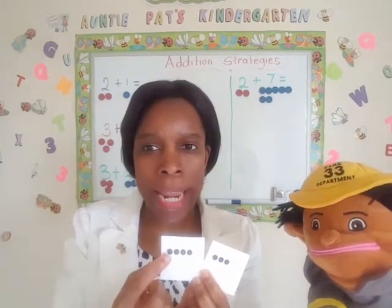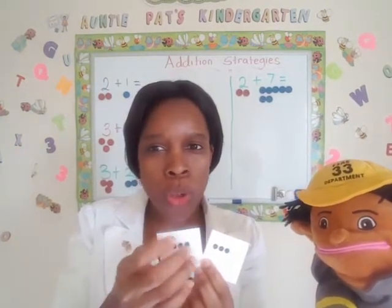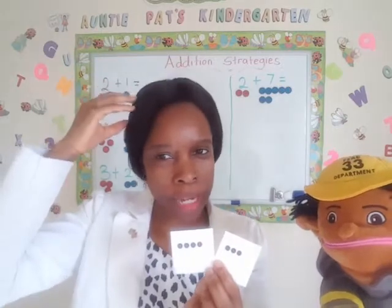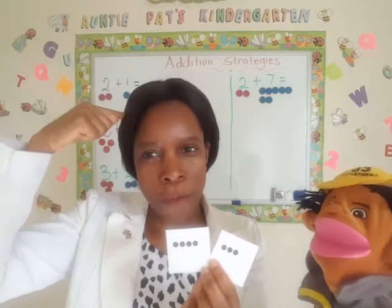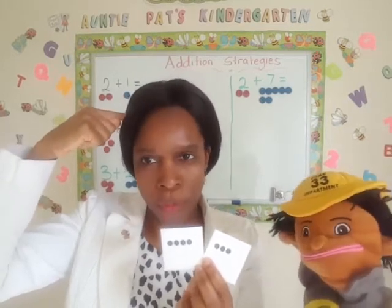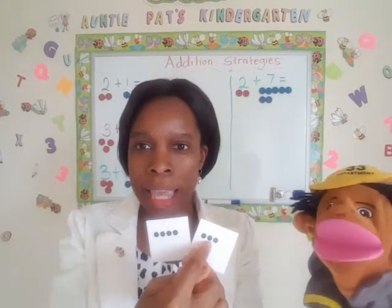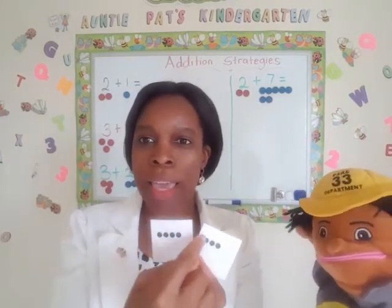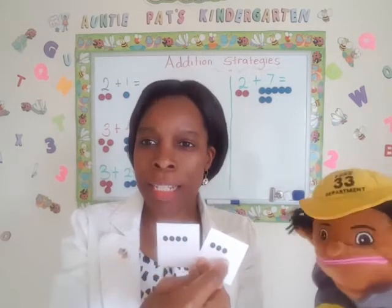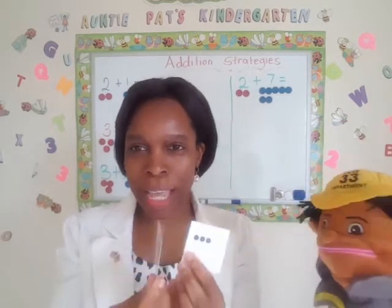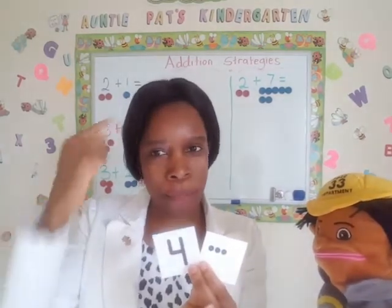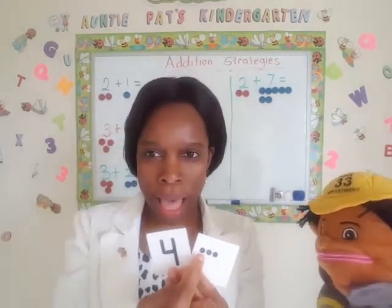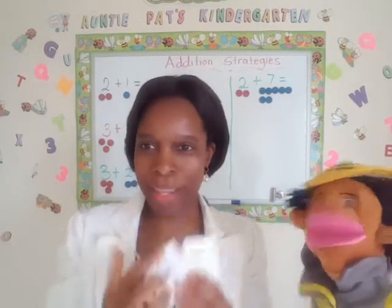Let's keep that in our heads — how many dots? Four. So we're going to count on. That means we're not going to start from one anymore. We've taken the whole of this number, which is four, and it's in our heads. What number is in our head? Four. So we're counting on from four: four, five, six, seven. All together we have seven dots.